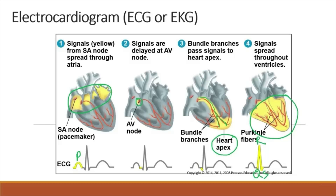A few seconds after the QRS wave begins, the ventricles contract. The interval between P and Q is the period where the transmission of impulse is delayed at the AV node, and the impulse is then transmitted to the apex of the heart before it spreads throughout the wall of the ventricles.